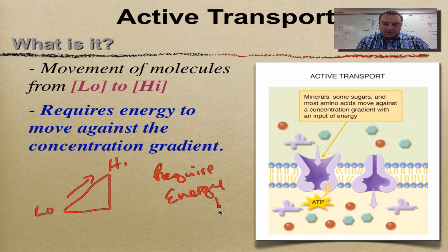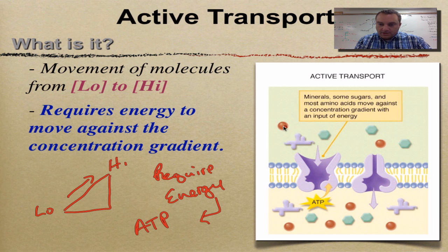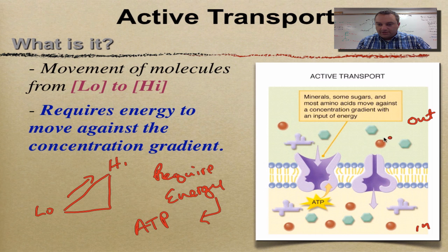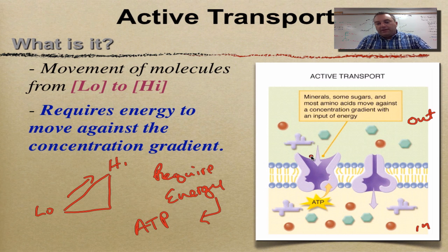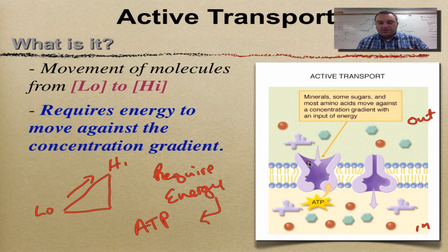This is going to require energy to go uphill, and remember energy in a cell is always used in the form of ATP, which we learned about in some previous chapters. I want you to pay attention to this picture. We have a low concentration of these molecules outside the cell and a higher concentration inside, but I still want to move these molecules inside. Naturally these molecules want to move back out, so what I need to do is pump them in — spend some energy and use these proteins to pump in these materials. That's active transport.